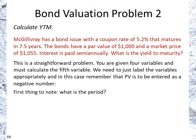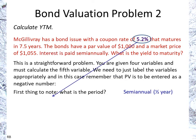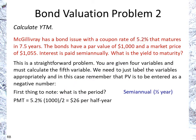First thing to note: what is the period? As you can see, we have semi-annual, so that's half a year, which means we're going to make adjustments. Payment is going to be 5.2% times $1,000 face value divided by 2 because of the semi-annual, giving us a $26 per half-year payment.